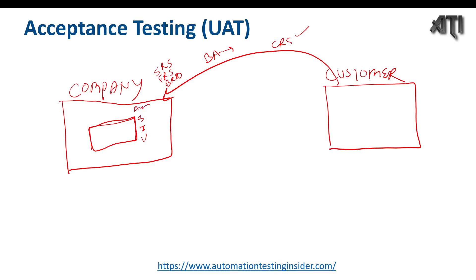Whenever we build software, the customer wants a final look at it — how the functionality works, how the workflow is, how the interface looks, and whether the features match their requirements. Since they are paying for the software, they want to review it. That is why they want to do UAT — User Acceptance Testing — and based on that, they will accept the application.